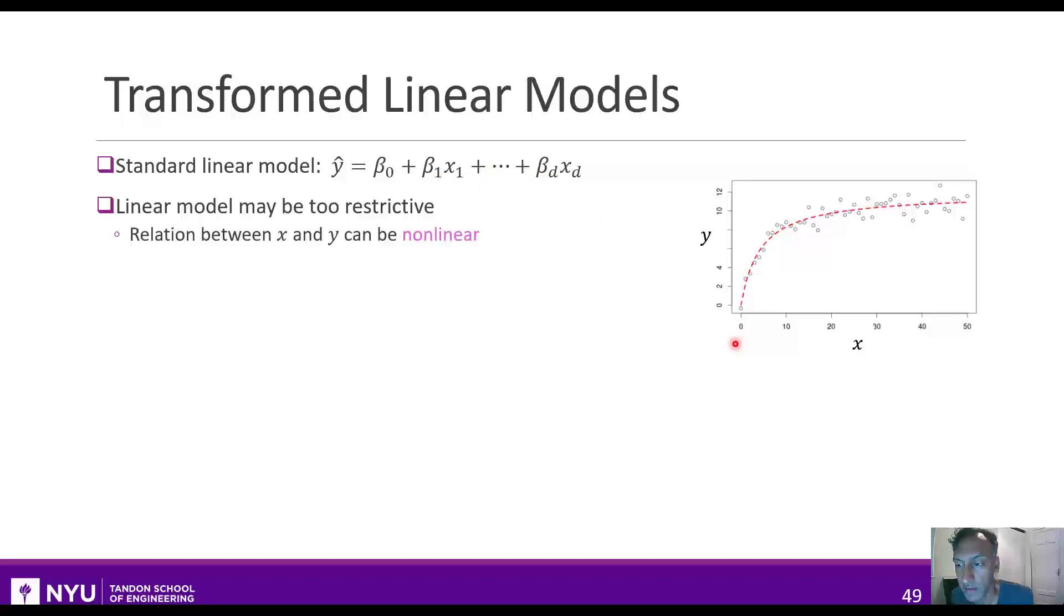But this linear model might obviously be too restrictive. Just as a simple case, imagine we had the data on the right here. Clearly, the relation between x and y in this case is non-linear. If you try to fit a linear relationship like this, you would get a straight line, and that obviously wouldn't be a good prediction. So somehow we need a more rich class of functions.